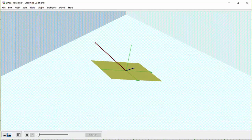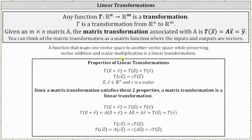Before we go, let's talk about a linear transformation. A function that maps one vector space to another vector space while preserving vector addition and scalar multiplication is a linear transformation. There are two properties: t of the sum of vectors u and v equals t of vector u plus t of vector v, and t of c times vector u equals c times t of vector u. Since a matrix transformation satisfies these two properties, a matrix transformation is a linear transformation.